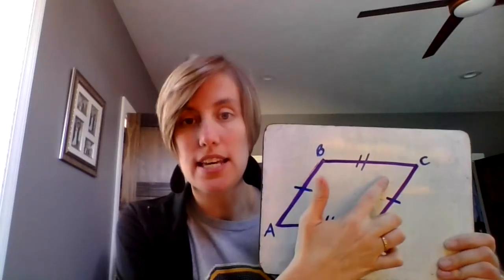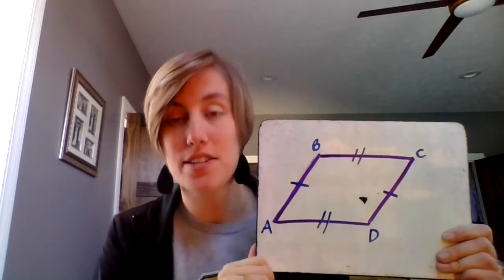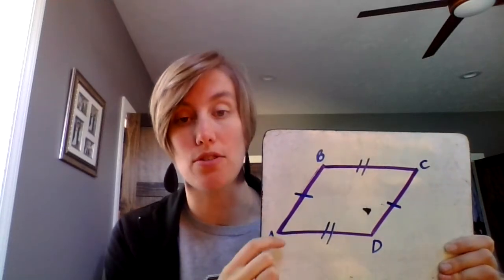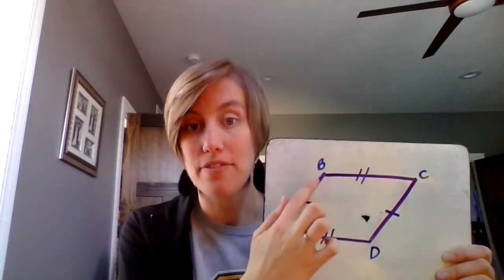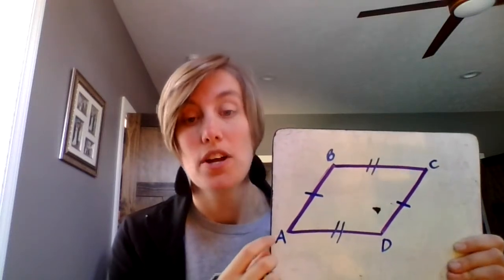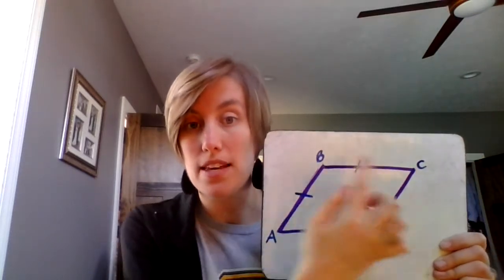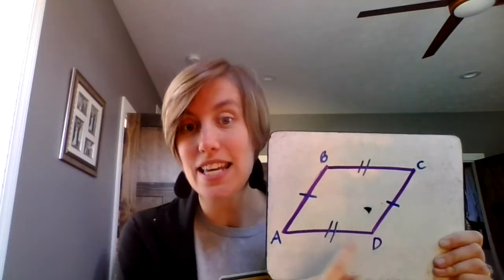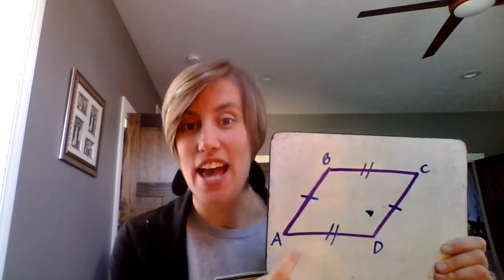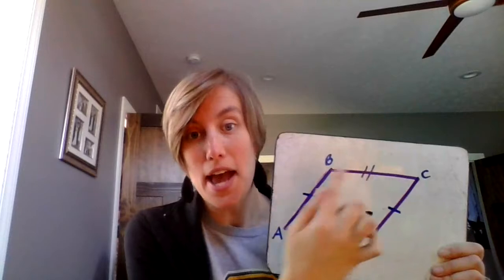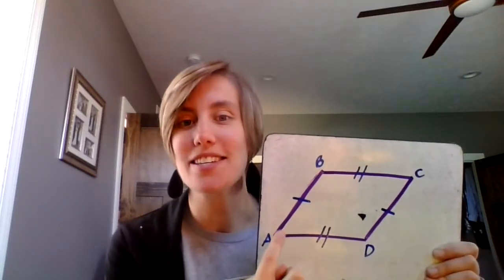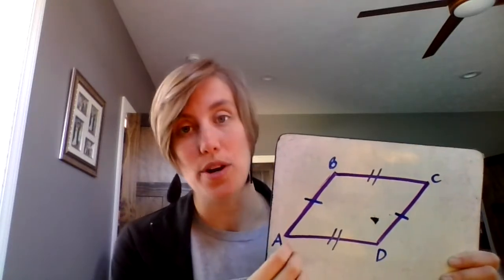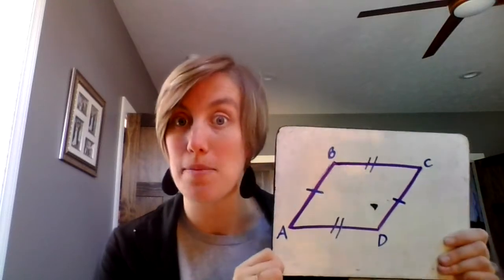Quadrilateral ACBD is not a possible name. You cannot jump through the air to name a quadrilateral — for any shape, really, you have to stay on the line. You can name this quadrilateral ABCD, or BCDA, or CDAB, or DCBA. You can go any way you want; you just can't skip through the air. Start where you want and end where you want, but don't jump through the air when naming a quadrilateral.